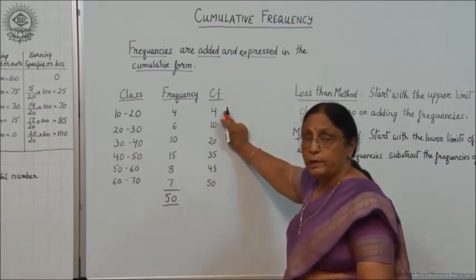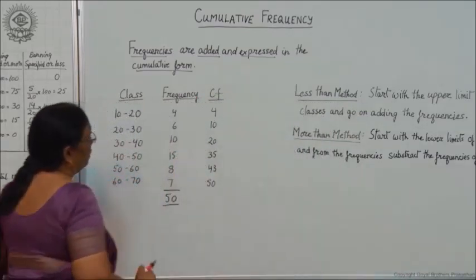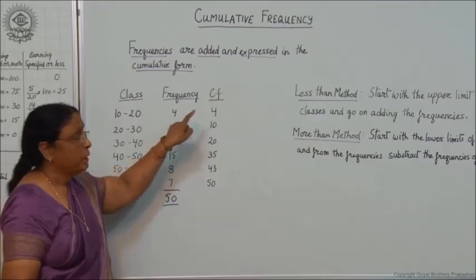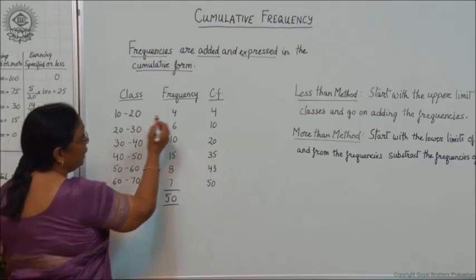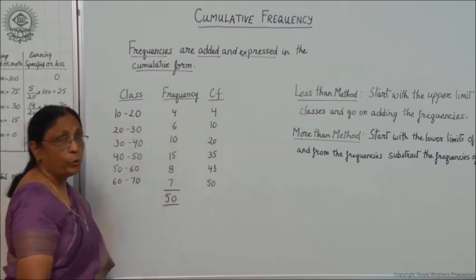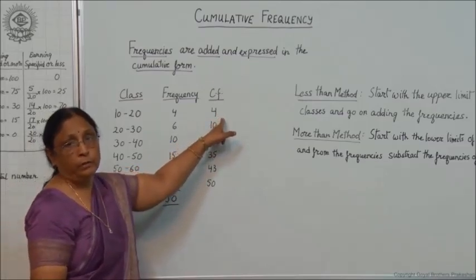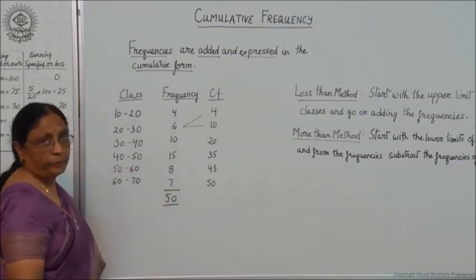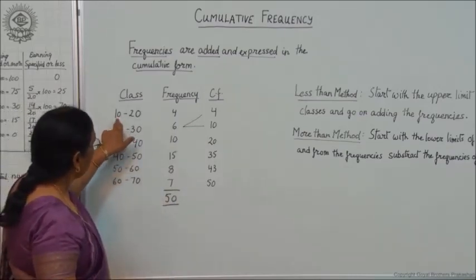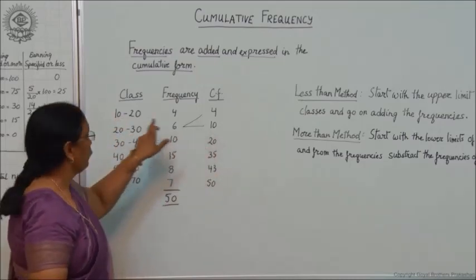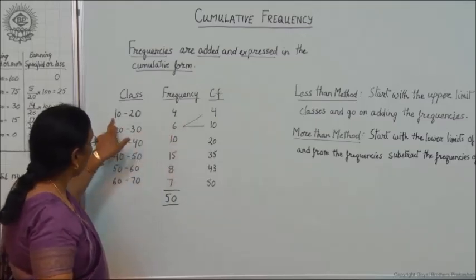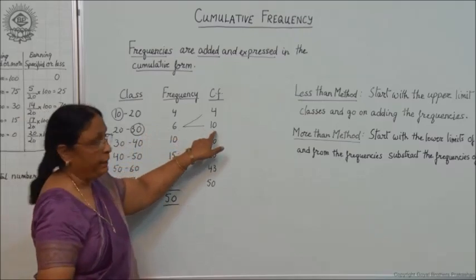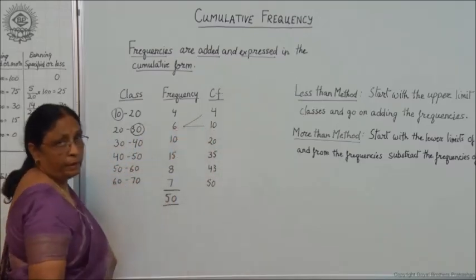When you are making the cumulative frequency, you have to add up these frequencies. The first one is 4, so in the cumulative frequency column you write 4, because there is no previous figure to add. This means that in the class interval 10 to 20 there are 4 total. For 20 to 30 there are 6, so you add 4 to 6 and get 10. This means that in the class interval 10 to 30 you have 10 — that is, between 10 and 30 the lower limit is 10 and the upper limit is 30, giving 4 plus 6 equals 10. This is the cumulative form.